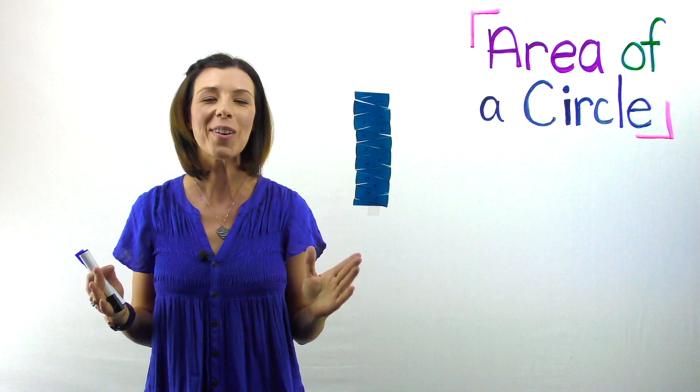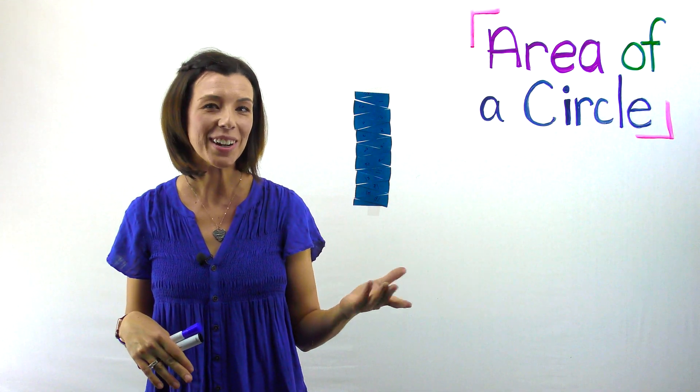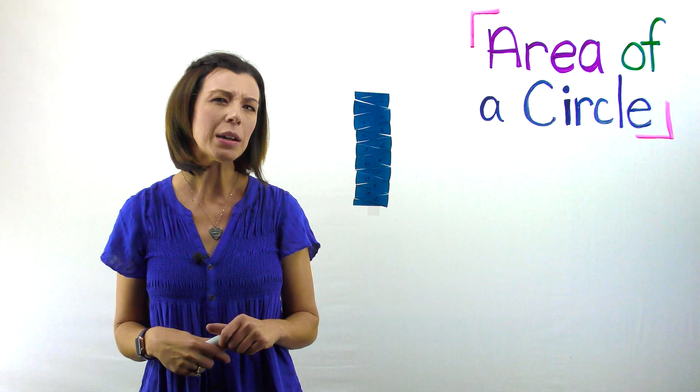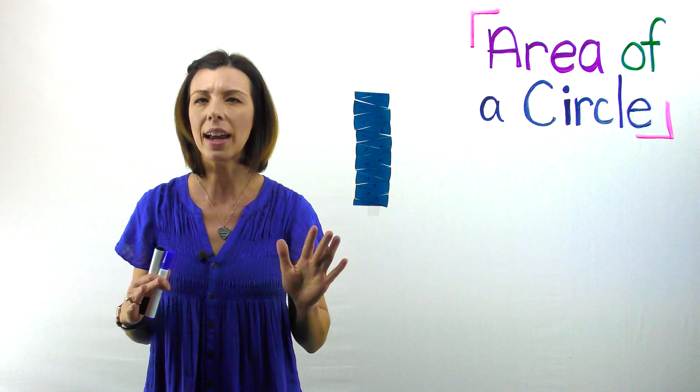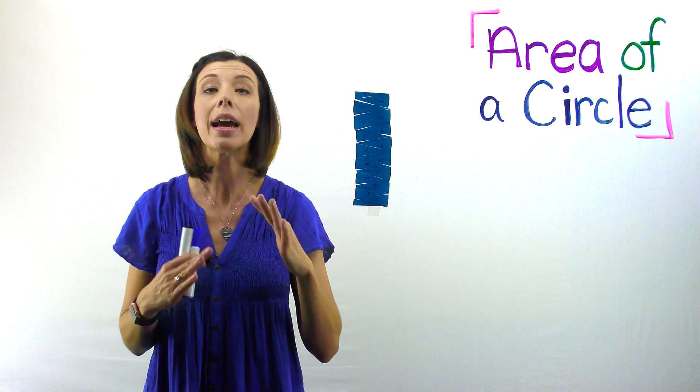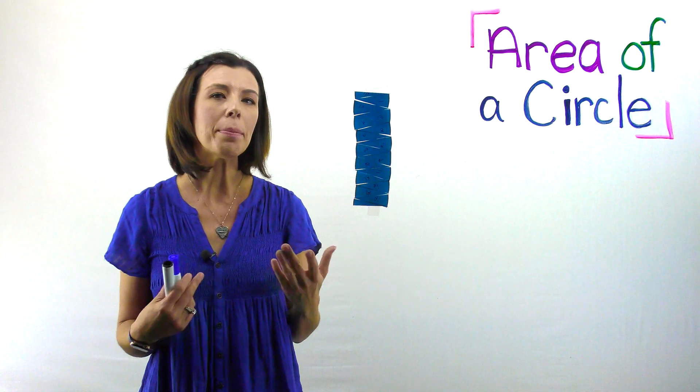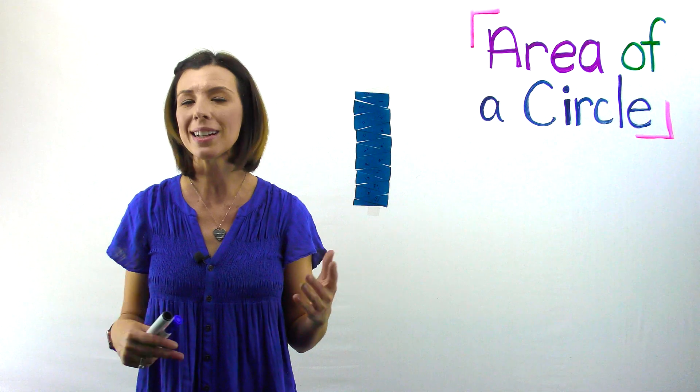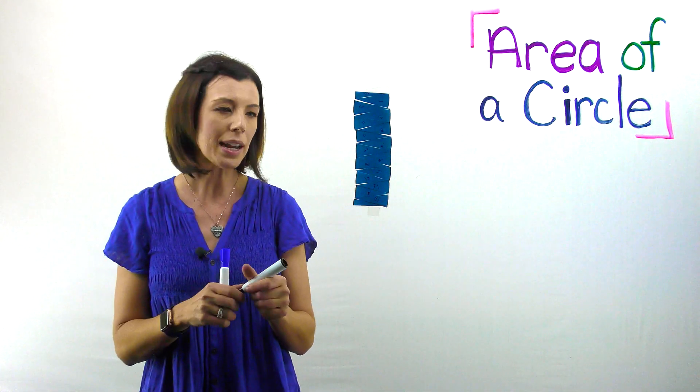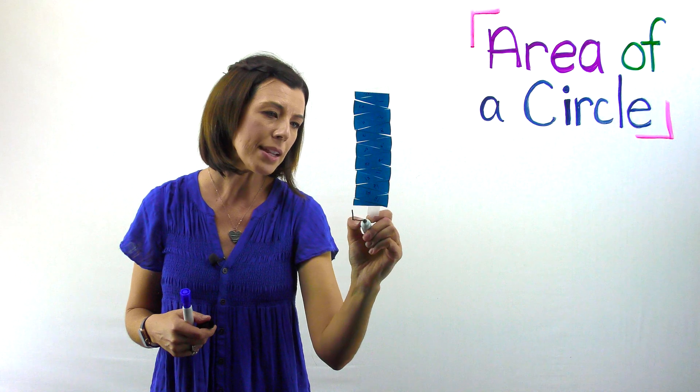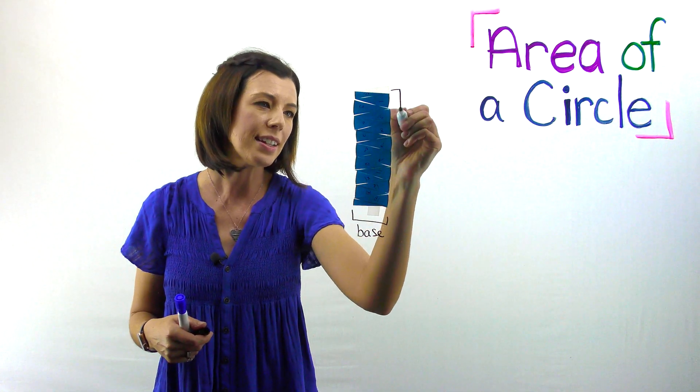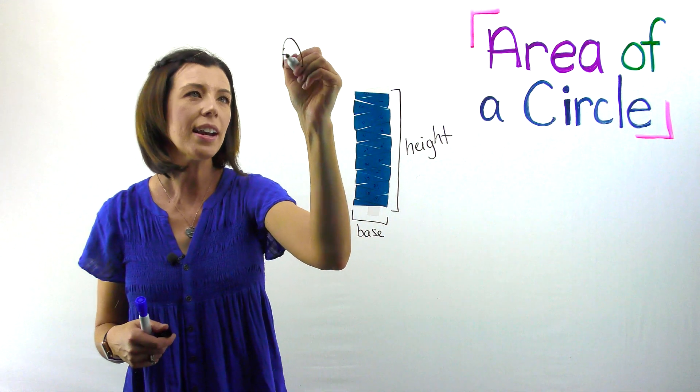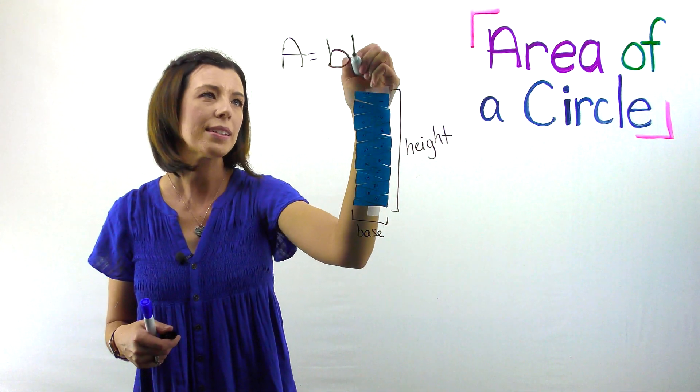So here's what's crazy. It looks like a rectangle, or maybe we can even call it a parallelogram. So now let's think about how would we find the area if this was a parallelogram. We know that a parallelogram is base times height. You could also think of an area of a rectangle as length times width. So let's go with base times height. We know that this is the base and this is the height. Area equals base times height.